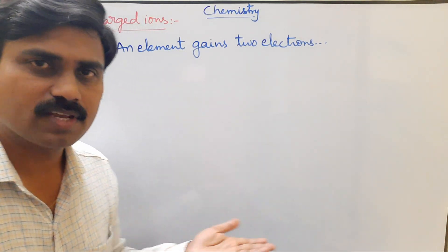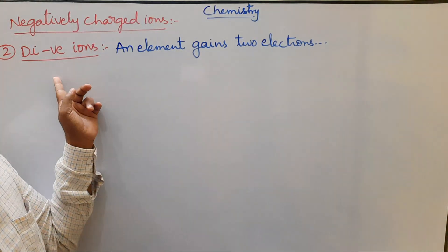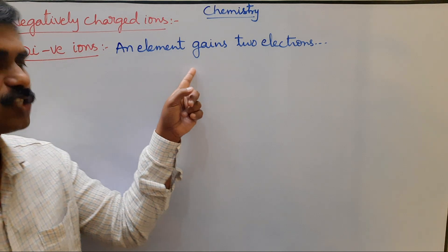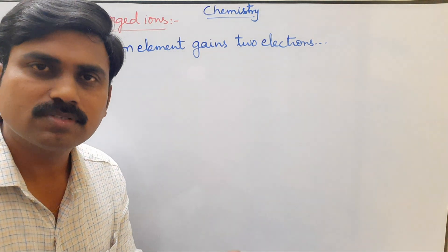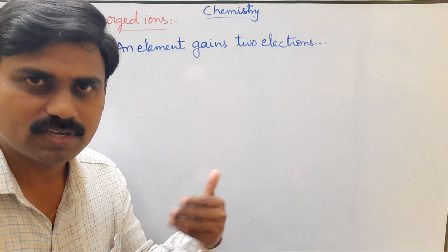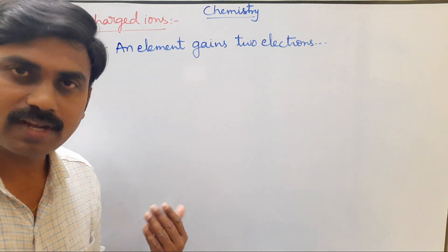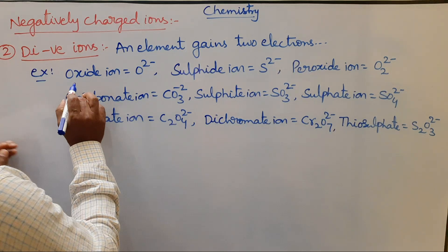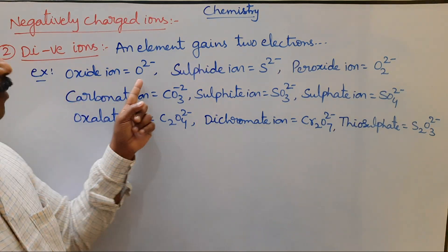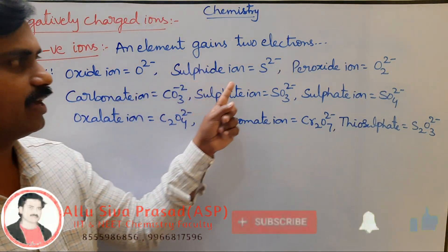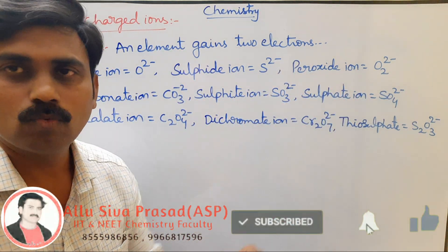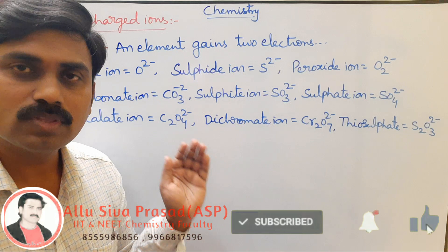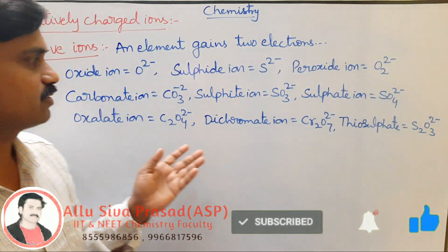Di-negatively charged ions: when an element gains two electrons, it forms di-negatively charged ions. Examples: oxide ion O²⁻, sulfide ion S²⁻, peroxide ion O₂²⁻.